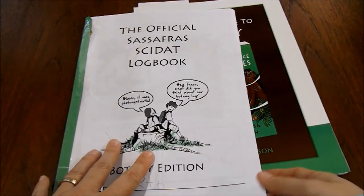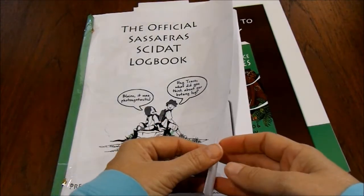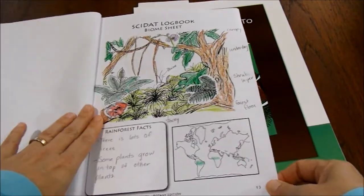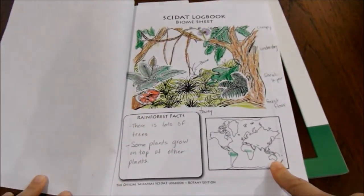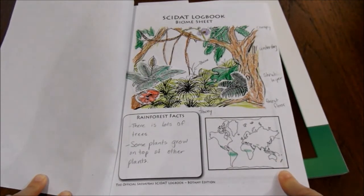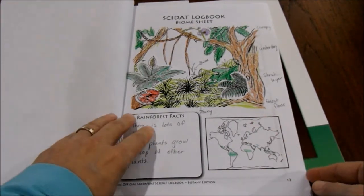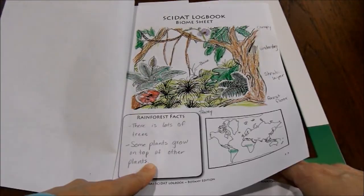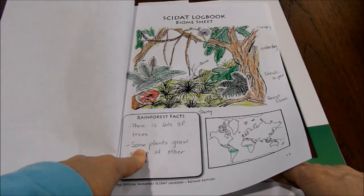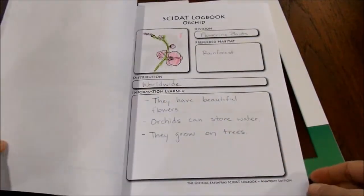We printed out our notebook page and each week we would fill out the biome sheet as we were reading through. Anytime we run across information as we're reading through the chapter, we would add information to the biome sheet. When we started the year I was writing for him because he's still learning to write.